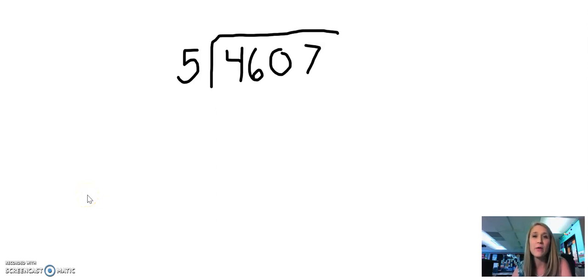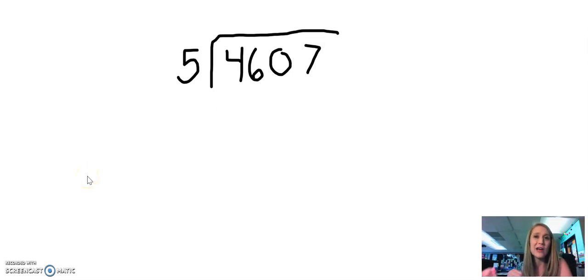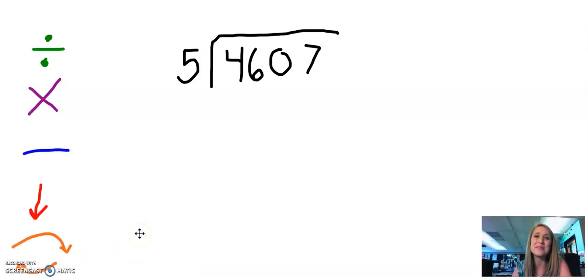In this rapid review video, we're going to be looking at the standard algorithm for long division when we have a four-digit dividend and a one-digit divisor. When we are dividing, we use our wrap to help us. The steps in the wrap are divide, multiply, and subtract, bring it on down, then bring it on back. We're going to use these steps to help us solve this problem today.